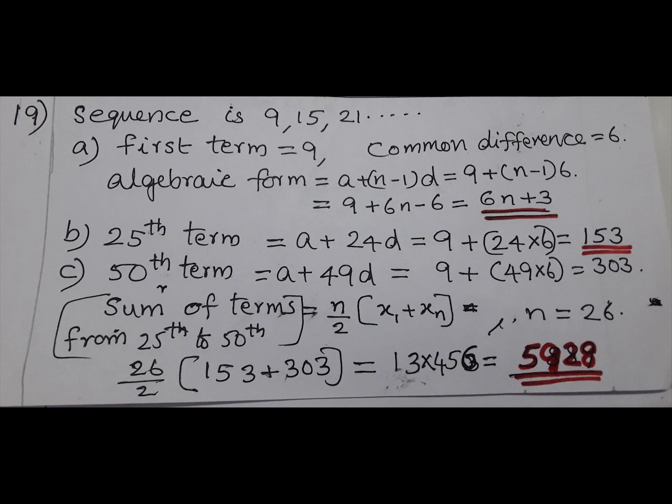19th answer: Sequence 9, 15, 21. First term 9, common difference 6. Algebraic form A plus N minus 1 into D, 9 plus N minus 1 into 6. Algebraic form 6N plus 3. 25th term: A plus 24D equals 153.